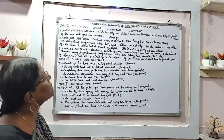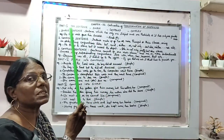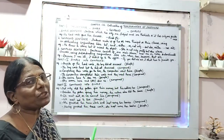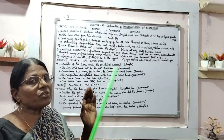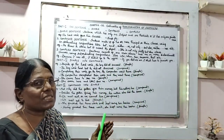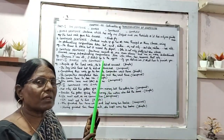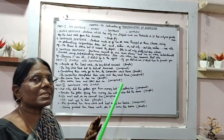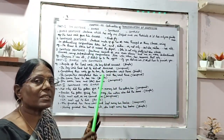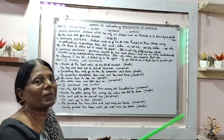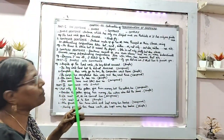Welcome to the grammar class. We learned in chapter 21 the transformation of sentences — affirmative to negative and negative to affirmative. Now we are going to have the transformation of sentences, but the sentences are simple sentence, compound sentence, and complex sentence. Let us come to the matter.